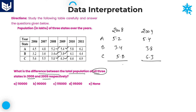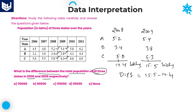For 2008: 5 plus 5 is 10, plus 4 is 14; decimals: 2 plus 4 plus 8 gives 14.4 lakhs. For 2009: 5 plus 5 is 10, plus 4 is 14; then 4 plus 8 plus 3 gives 15, then 15.5 lakhs. Now the difference: 15.5 minus 14.4 equals 1.1 lakhs, which is nothing but 1 lakh 10,000. That is the required difference. Option A is the right answer.